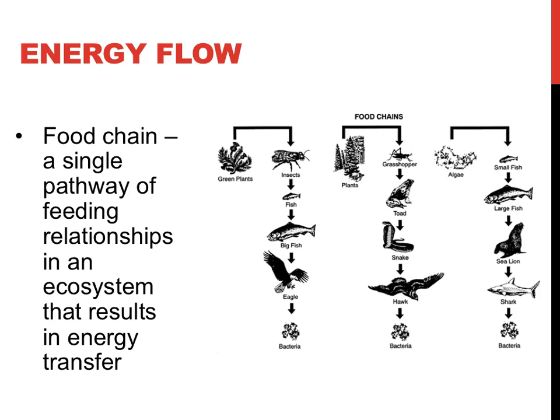In the picture furthest to the left, green plants are the producers and collect energy from the sun. Insects eat the plants, small fish eat the insects, large fish eat the small fish, and hawks eat the large fish. When the top consumers, or potentially any other organisms, die, they can be chemically broken down by bacteria.